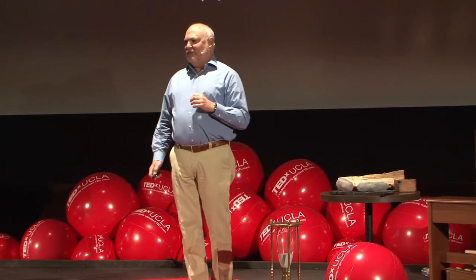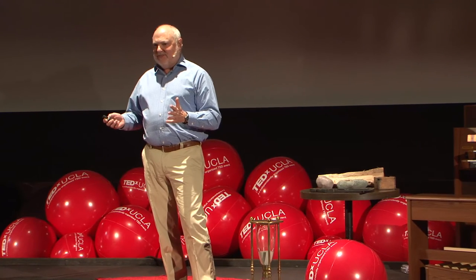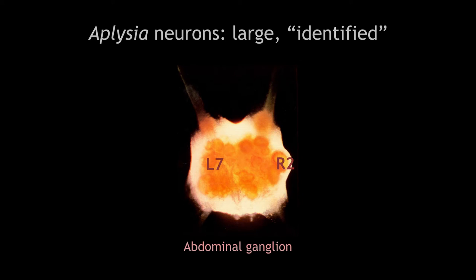Why study learning in Aplysia? It has a very simple nervous system — here's the abdominal ganglia. Aplysia has only 20,000 neurons in its entire nervous system; that sounds like a lot until you realize we have 100 billion. Another advantage is that the neurons are very big: the neuron R2 is a millimeter in diameter — you can see it without a microscope. Most neurons have been mapped; we know their physiological and behavioral functions and synaptic connections. You can open every Aplysia and see the same neurons — they're like old friends with names.